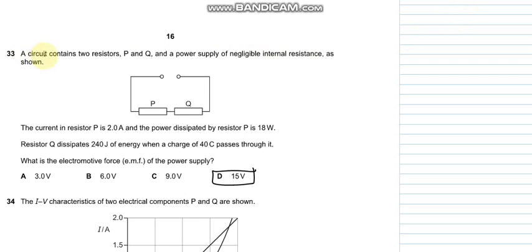Question number 33 says that a circuit consists of two resistors P and Q. The current in P is 2 amperes and the power is 18 watts. The resistor Q dissipates 240 joules of energy and a charge of 40 coulombs passes through it. What is the electromotive force of the power supply? Voltage across P is P equals IV, so V equals P over I which is 9 volts. VQ is energy supplied per unit charge, which is 240 divided by 40 which is 6 volts. So 6 volts plus 9 volts is 15 volts, so D is the appropriate answer.